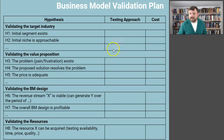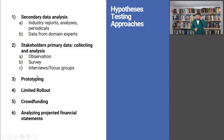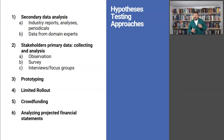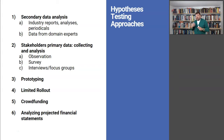Let's talk about testing approaches — how can we test, for example, that the overall business model design is profitable or that the price is adequate? There are many testing approaches, but the six most important ones are: first, secondary data analysis. Do your homework — read industry reports, analysis, and periodicals. Things like initial niche size you can always get from secondary data. Plus, data from domain experts means talking to people who already tried things in this industry or experienced this problem, and pitching your idea to them.